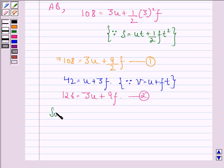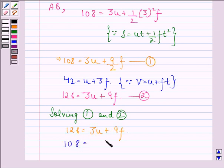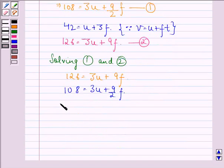Now solving 1 and 2, we get 126 equals 3u plus 9f, and 108 equals 3u plus 9 by 2 f. Now subtracting this from this we have